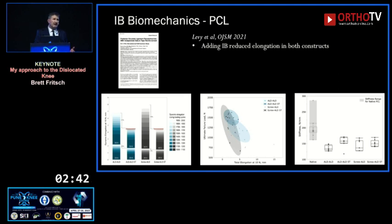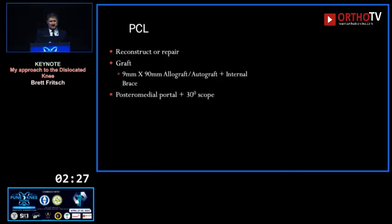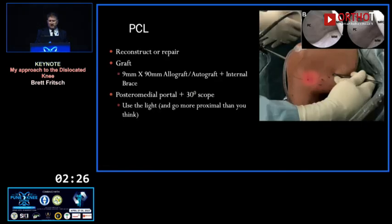Bruce Levy's work on the biomechanics of an internal brace in PCLs showed that adding the internal brace reduced elongation. PCLs stretch out — when I started training a grade two final outcome was considered good; now we get them to grade zero or grade one. You get smaller elongation with the internal brace and stiffness closer to that of the native PCL.